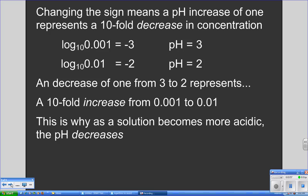Let's look at our previous example. When the base 10 log increases from minus 3 to minus 2, the pH decreases from 3 to 2 since we changed the sign. As the pH decreases from 3 to 2, the concentration of hydrogen ions increases tenfold from 0.001 to 0.01. This explains the seeming paradox that as hydrogen ion concentration and acidity go up, pH goes down.